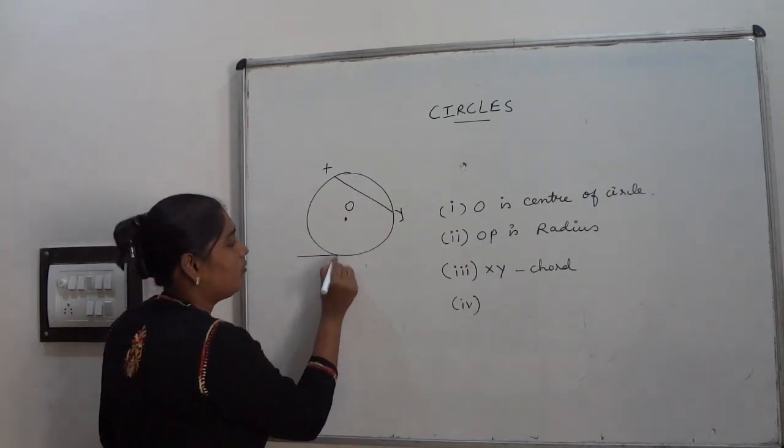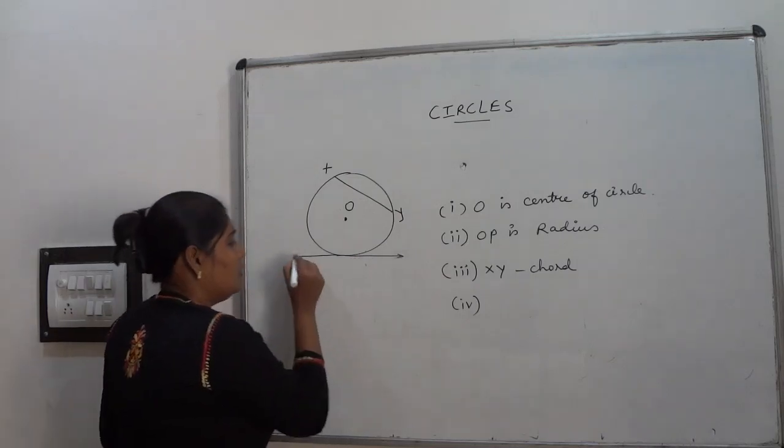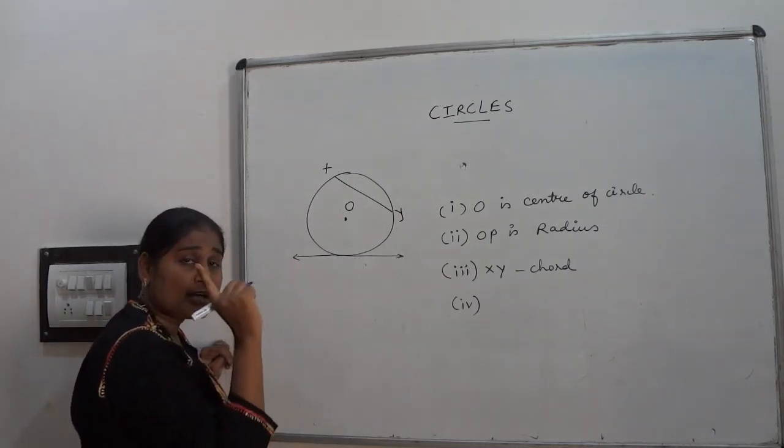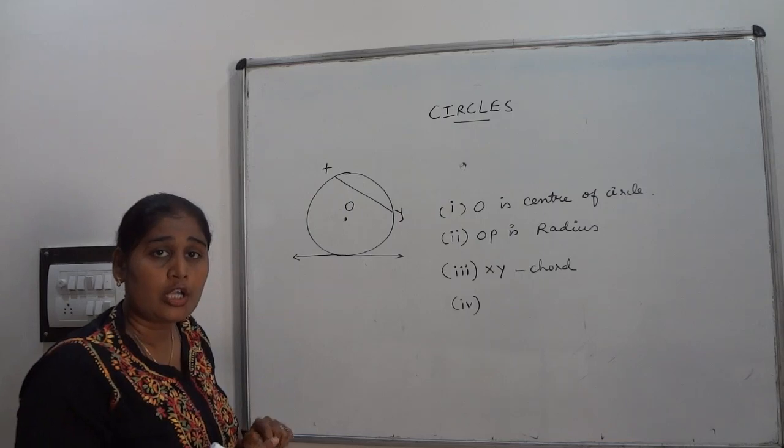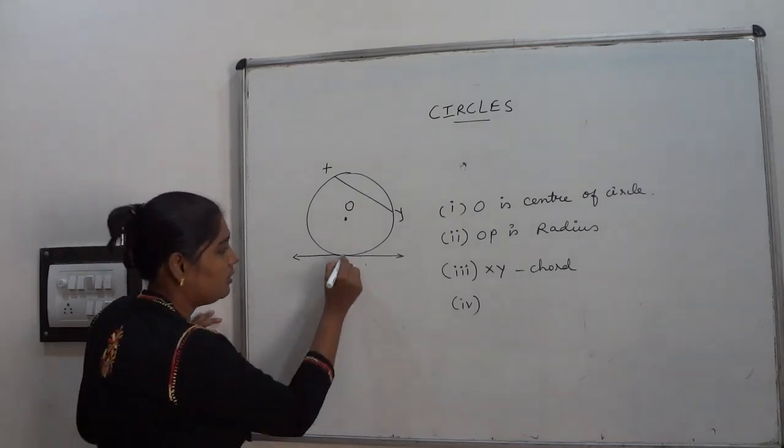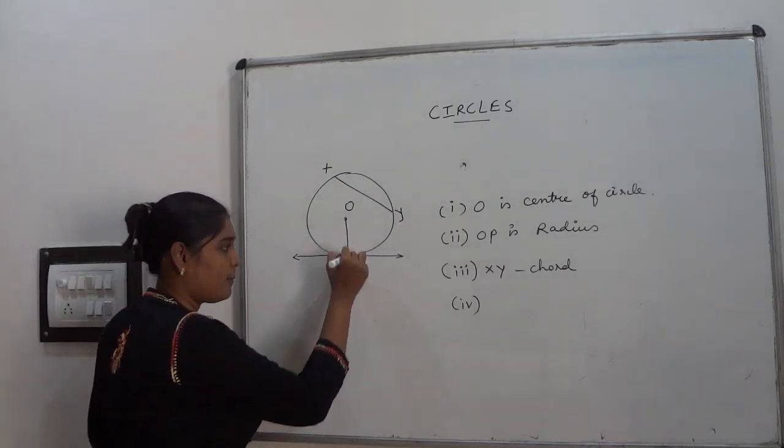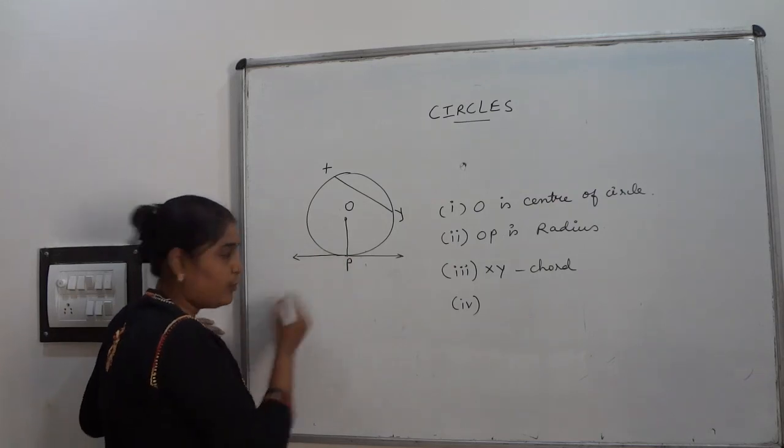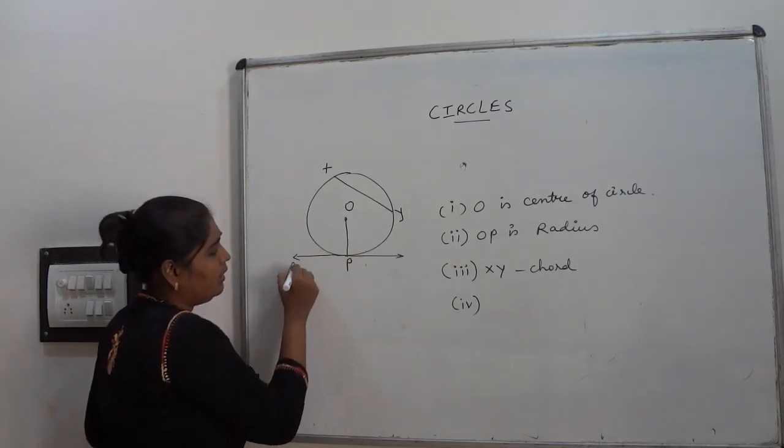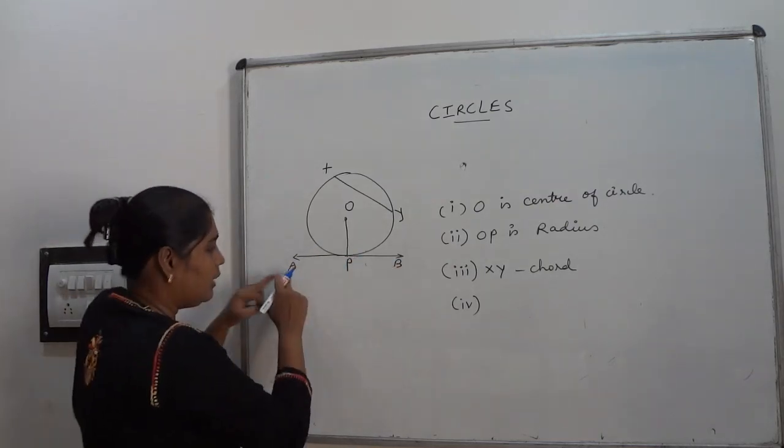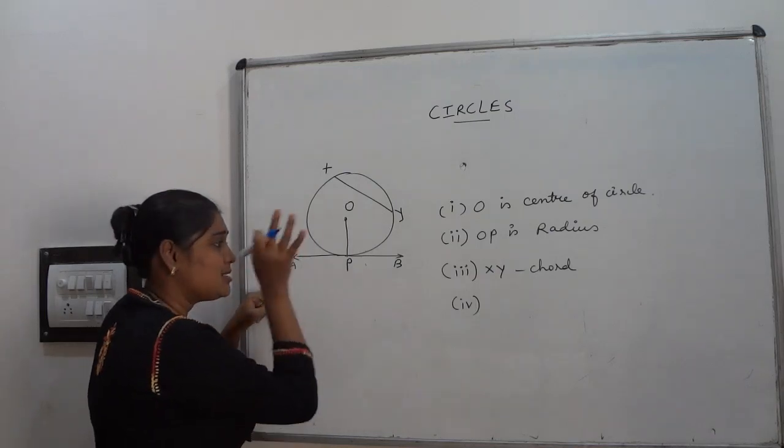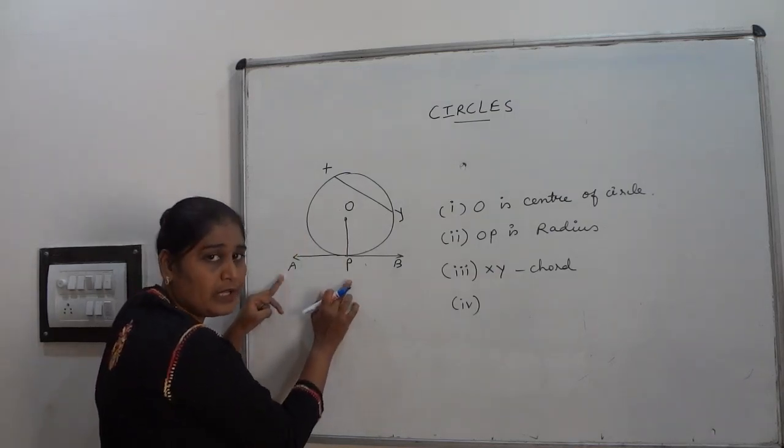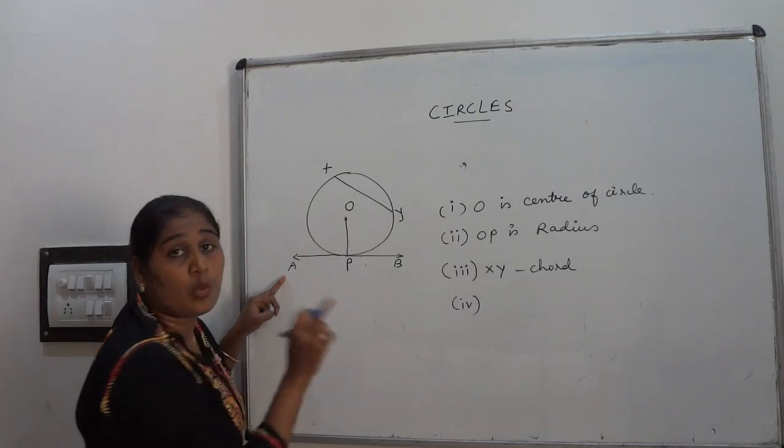The tangent means what? A line which touches a circle at a single point is called tangent. Look here. This line you see P point and this I am keeping AB. AB is a line which touches the circle at a point P. So AB line is called what? Tangent.